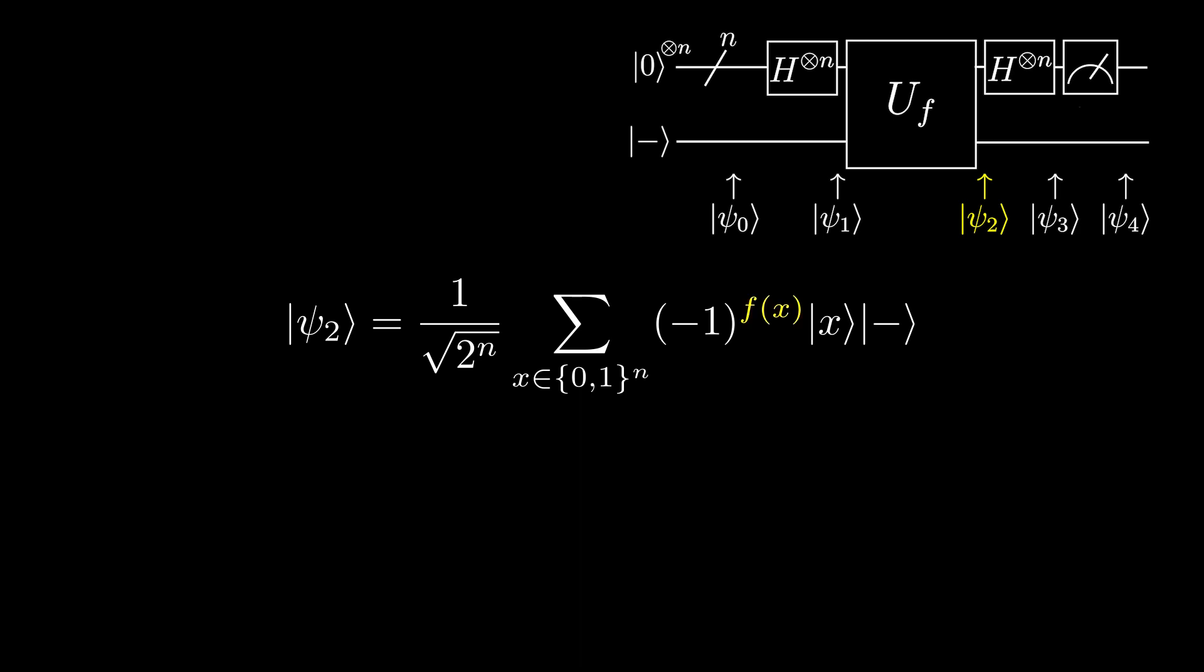Let's rewrite f(x) as the dot product of x and s, since that is the definition of our function. Let's also omit the minus qubit, since it is not needed anymore.